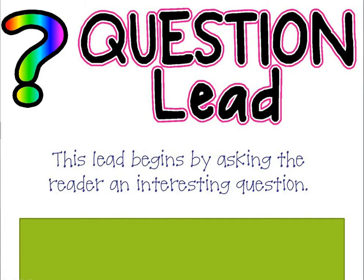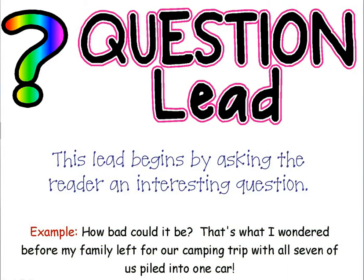The next one — I sort of feel like this one can be cheating because it's so overused, but it can be done well. This lead begins by asking the reader an interesting question, often called a rhetorical question. When you ask a question in a piece of writing, you're not really expecting an answer — you're just asking the reader to consider something, and oftentimes you can hint at your theme this way. Here's one example: 'How bad could it be? That's what I wondered before my family left for our camping trip with all seven of us piled in one car.' That question instantly gets readers thinking, 'What was so bad?' and then the topic is introduced.